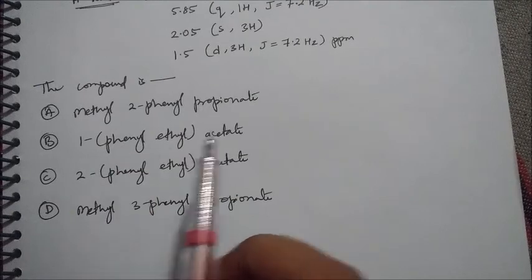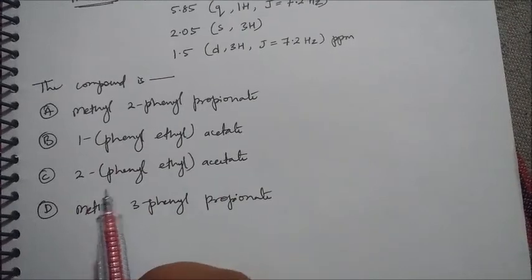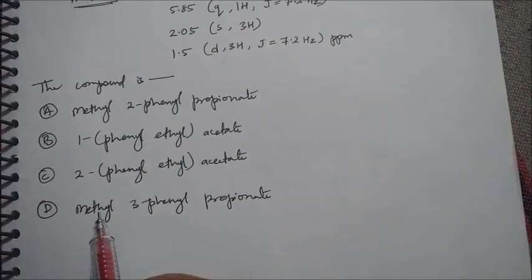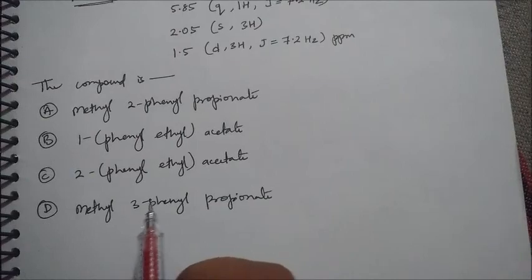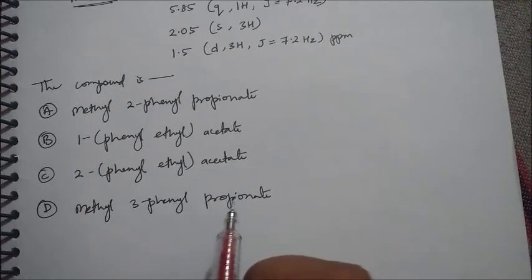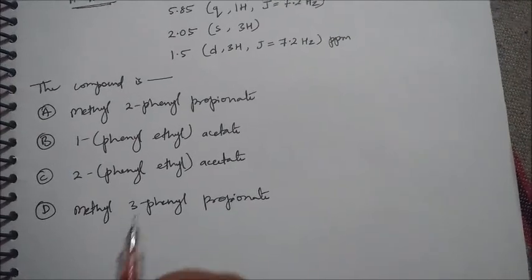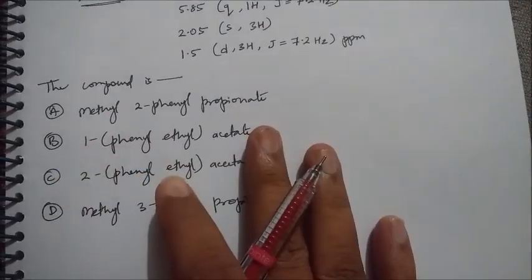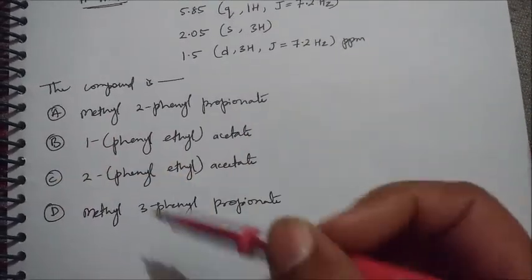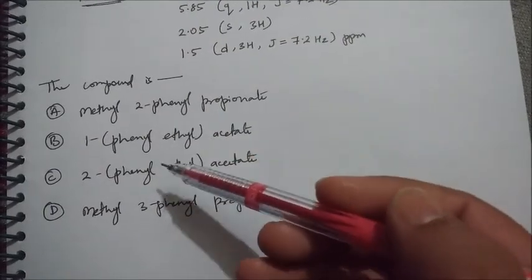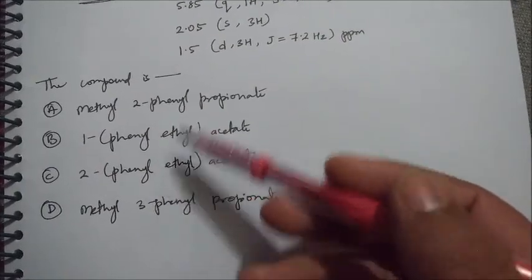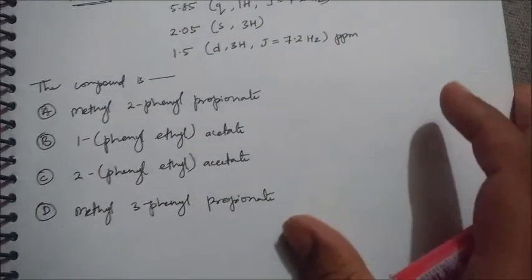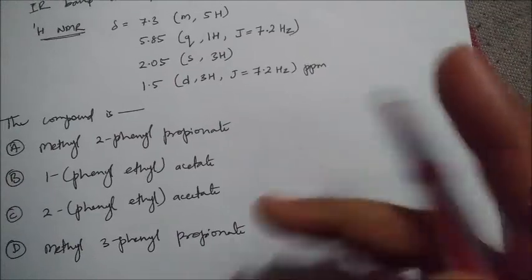In the options we have four compounds: first is methyl 2-phenylpropionate, second is 1-phenylethyl acetate, third is 2-phenylethyl acetate, and fourth is methyl 3-phenylpropionate. Before solving further, we have to draw these names into their corresponding structures.